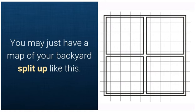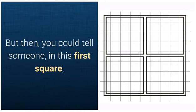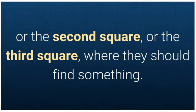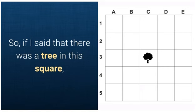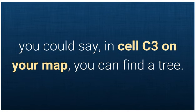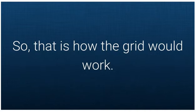You may just have a map of your backyard split up like this. But then, you could tell someone, in this first square, or the second square, or the third square, where they should find something. And sometimes, your grid is set up with letters and numbers. So if you said that there is a tree in this square, you could say, in cell C3 on your map, you can find a tree. So that is how the grid would work.